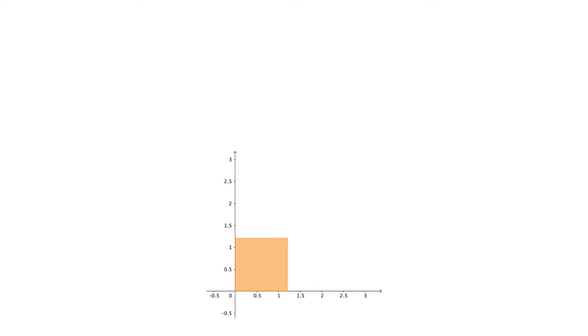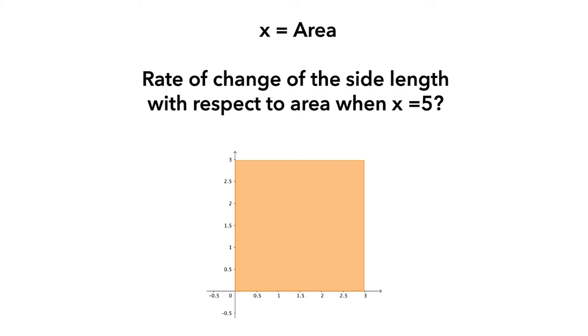In this video, you will see Kelly and Maria working on the following problem. If x represents the area of a growing square, what is the rate of change of the side length with respect to the area when x equals 5?